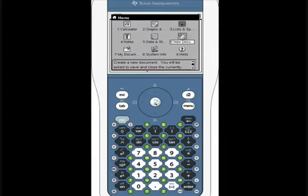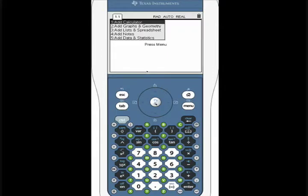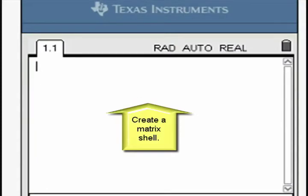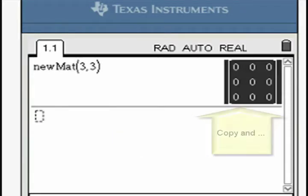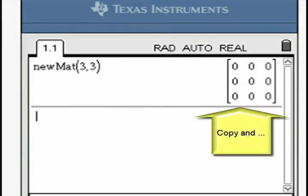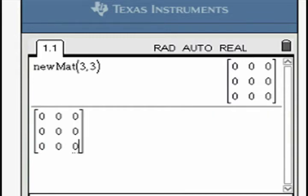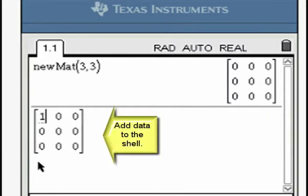Open a new calculator window and create a shell for a 3x3 matrix as shown. Copy this matrix shell and paste it into a new line.